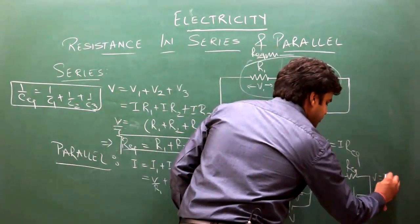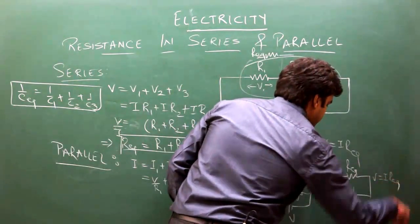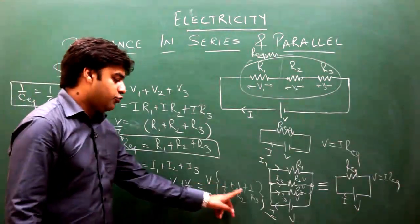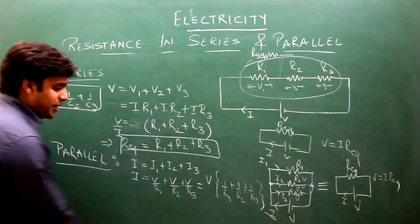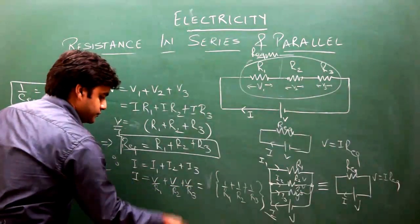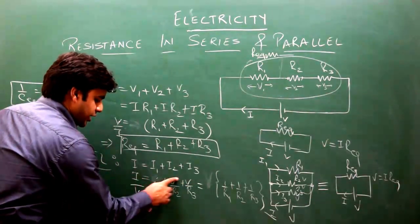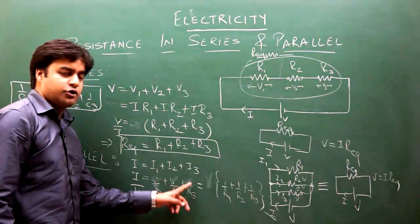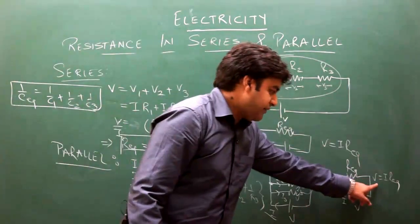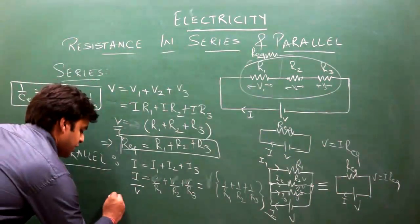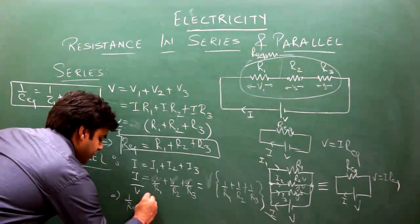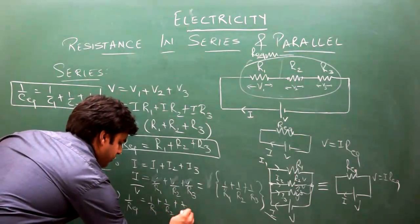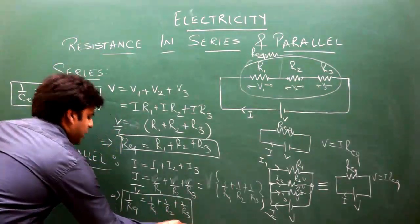the formula gives V = I into R_equivalent. So I = V times (1/R1 + 1/R2 + 1/R3). From this, 1/R_equivalent = 1/R1 + 1/R2 + 1/R3. This is the formula for parallel resistance.